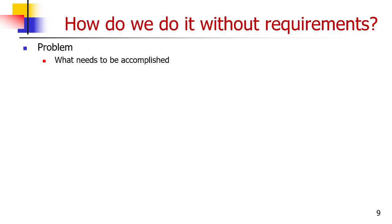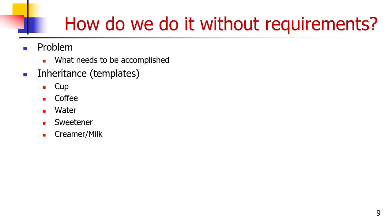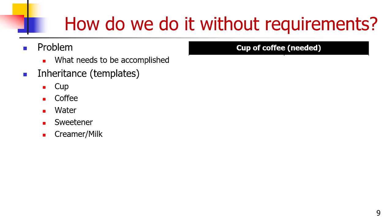So how do we do it without requirements? Well, we have a problem — what needs to be accomplished? And to help us do that without requirements, we use the content of inheritance and templates. So we have a template. A cup of coffee is a system. We know what's in it: a cup of coffee, water, sweetener, creamer or milk. Because it's an instance of a class of systems — it's been done before. And notice I'm using templates as we go along all the way through this presentation.